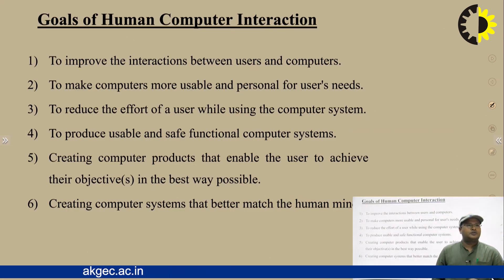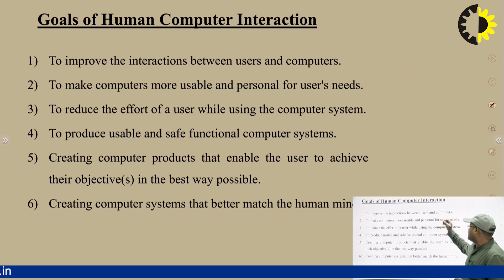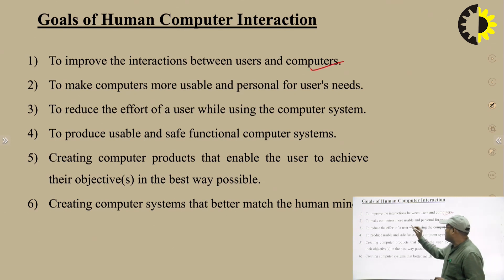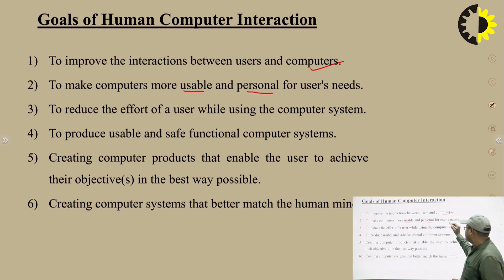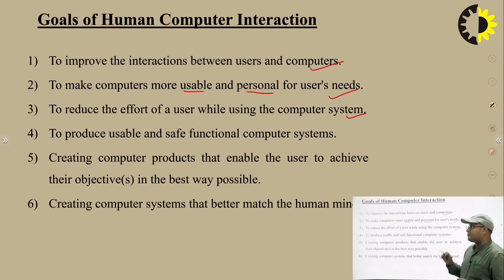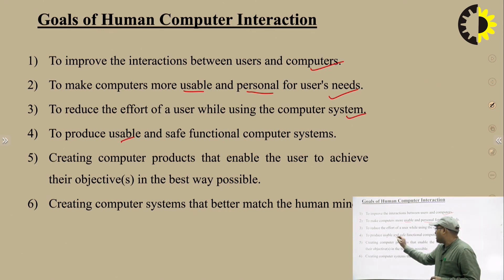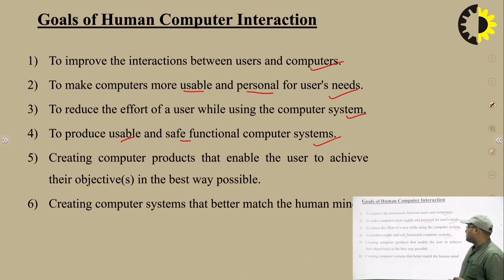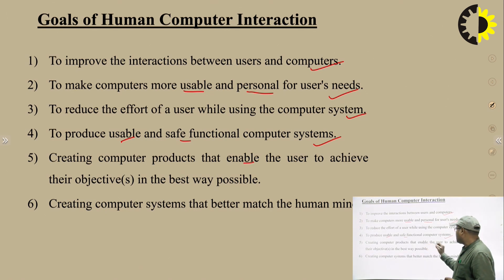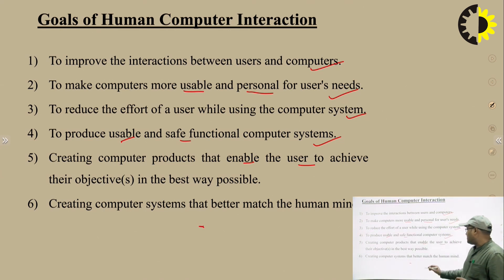What are the goals of Human Computer Interaction? The first goal is to improve the interaction between users and computers. The second goal is to make computers more usable and personal for user needs. The third goal is to reduce the effort of a user while using the computer system — producing usable and safe functional computer systems. We also study HCI for creating computer products that enable the user to achieve their objectives, and to create systems that better match the human mind.